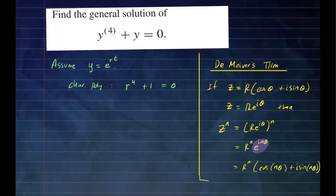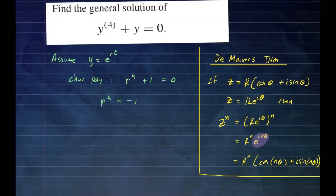That is what we're going to be using here, and from there we can figure out the roots. That's the general version of De Moivre's theorem. Now let's take a look at what we have. Treating r as Z, if I subtract 1 from both sides, I have r to the 4th equal to negative 1.